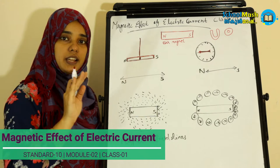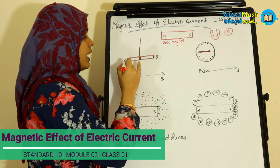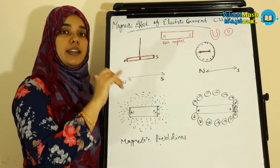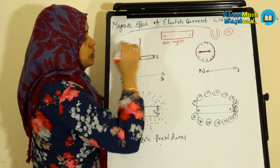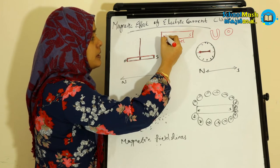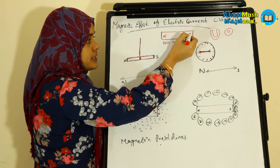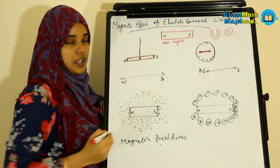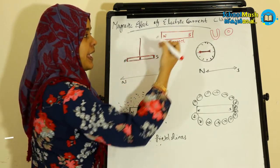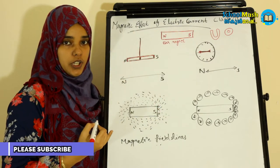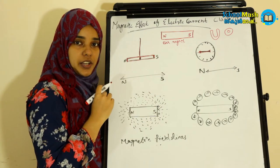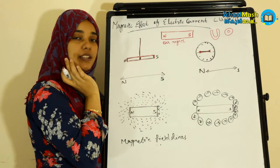When we hang a magnet freely and allow it to become stable, it will come to rest in a stable position. One end is the North Pole and one end is the South Pole. The end called North Pole and the end called South Pole — when freely suspended, the magnet aligns in the north-south direction.